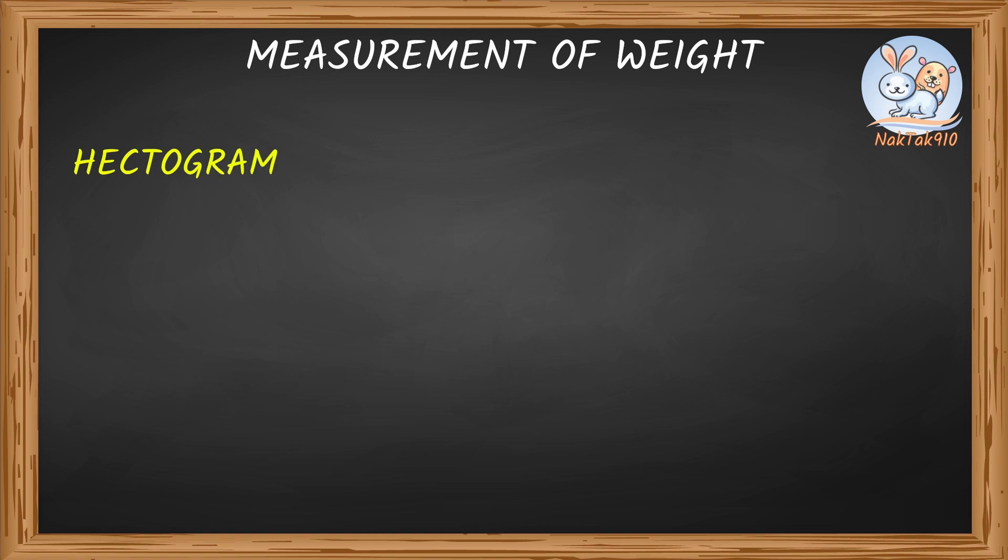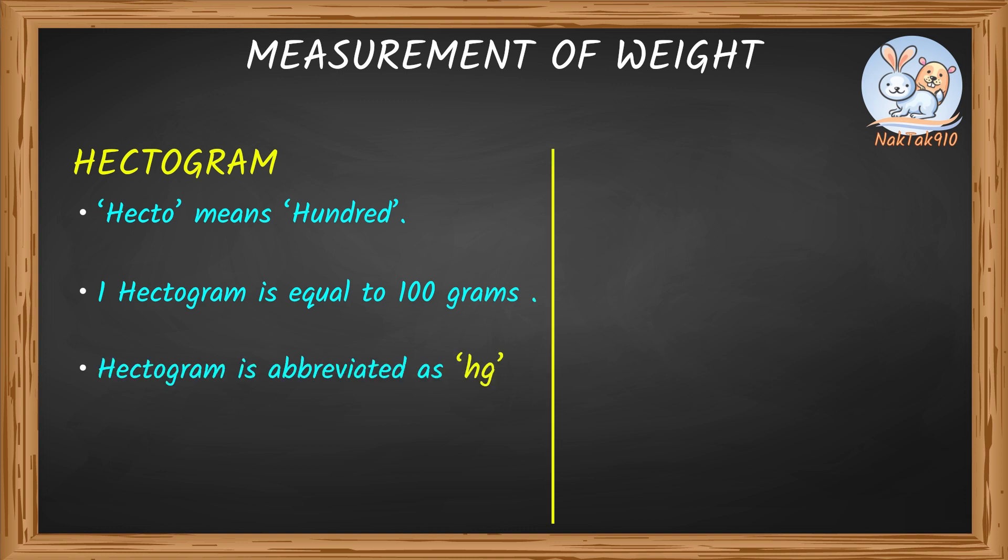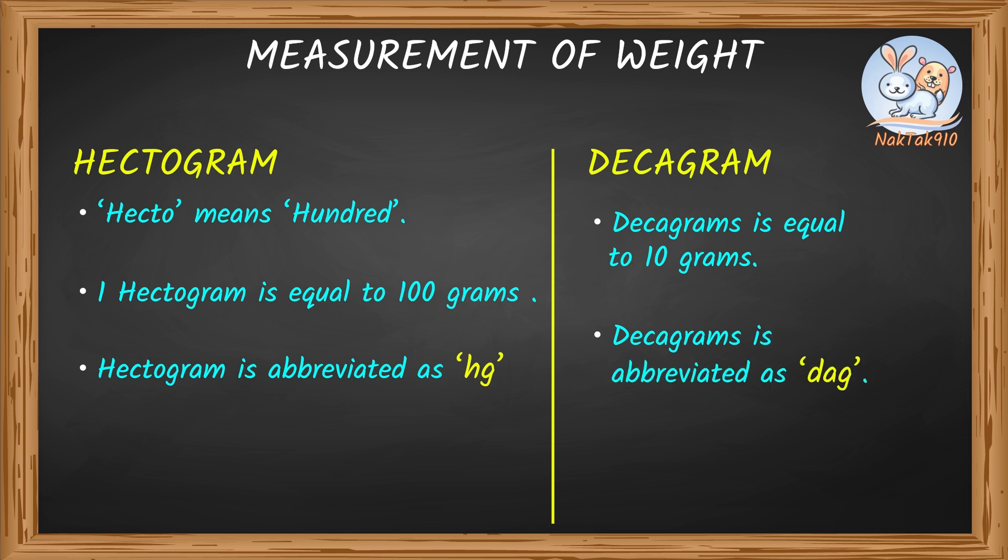Hectogram. The word hecto means 100, which means one hectogram is equal to 100 grams. Hectogram is abbreviated as hg. Decagram. Decagram is usually equal to 10 grams. Decagram is abbreviated as dag.